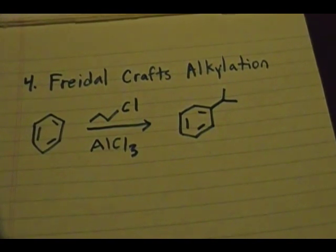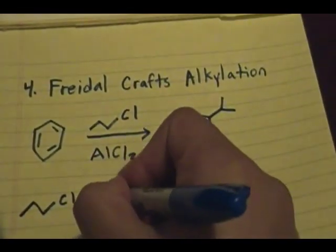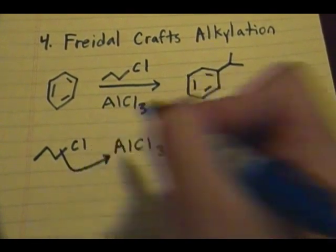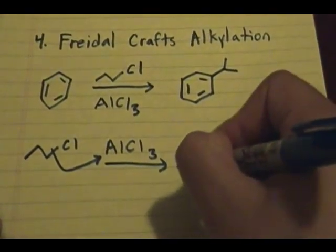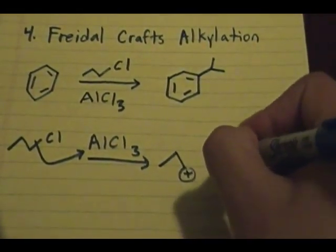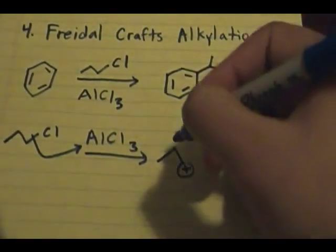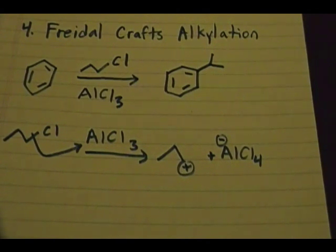Let me show the mechanism. If you have your alkyl halide and AlCl3, a pair of electrons and the chlorine are going to add into AlCl3, forming a carbocation intermediate plus AlCl4⁻. Now, since this is a primary carbocation intermediate — recall from your first semester of organic chemistry the 1,2-hydride shift or alkyl shifts — that's what's going to take place. You're going to rearrange to form a more substituted, more stable carbocation intermediate.